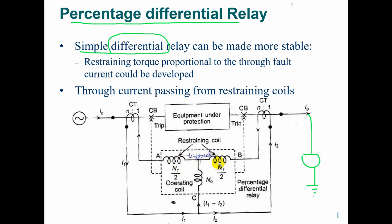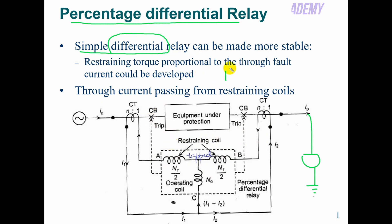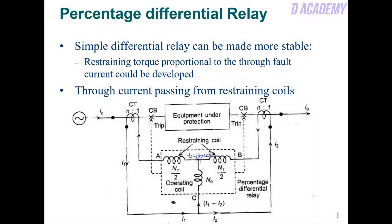The current passing through the restraining coil will be the primary current Nr/2 into I1, and the secondary city's current Nr/2 into I2 will pass through the restraining coil — this is what will restrain my relay. The torque is directly proportional to I2, so the torque is proportional to I2.